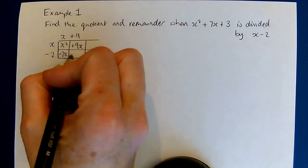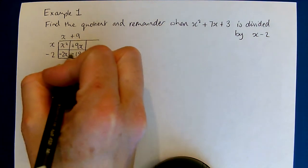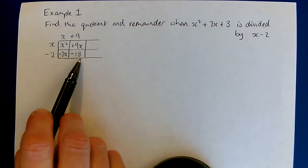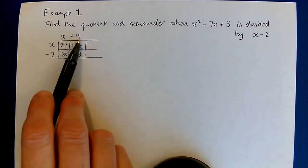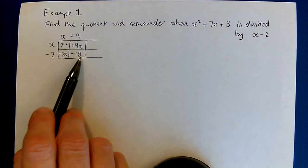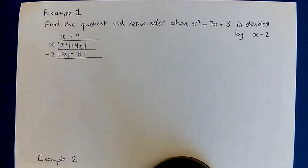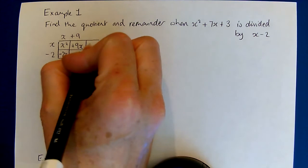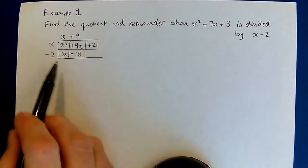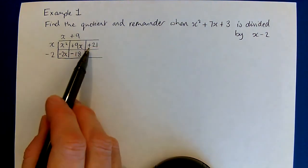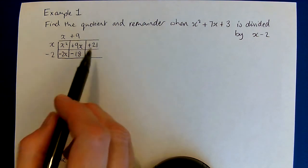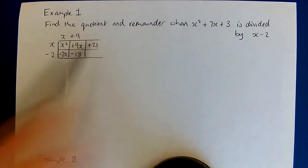I can now multiply these two together to fill this bit in. Negative 2 times positive 9 is negative 18. Now we have run out of powers of x and that means we've come to the end of the quotient, but we have got take away 18 and we need add 3, so we need to plus 21.